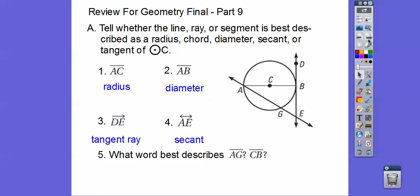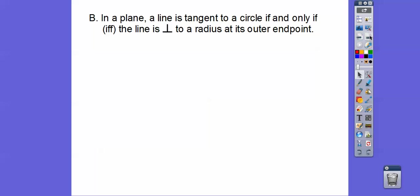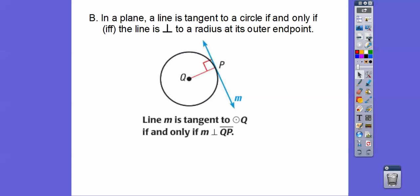Speaking of chords, what word best describes AG? That would be a chord right there. How about CB? That would be a radius. So in a plane, a line is tangent to a circle if and only if the line is perpendicular to the radius way out at the outer endpoint. This line M is tangent to circle Q because out here at this radius QP, it forms a right angle with line M.